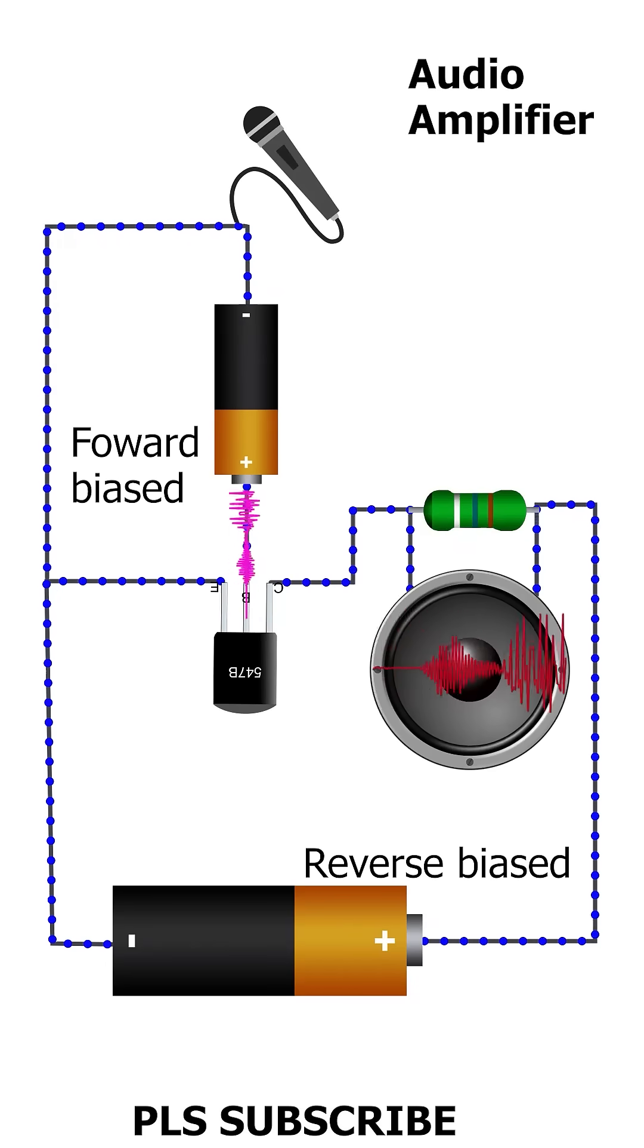Here, the base-emitter junction is forward-biased, and the collector-base junction is reverse-biased.